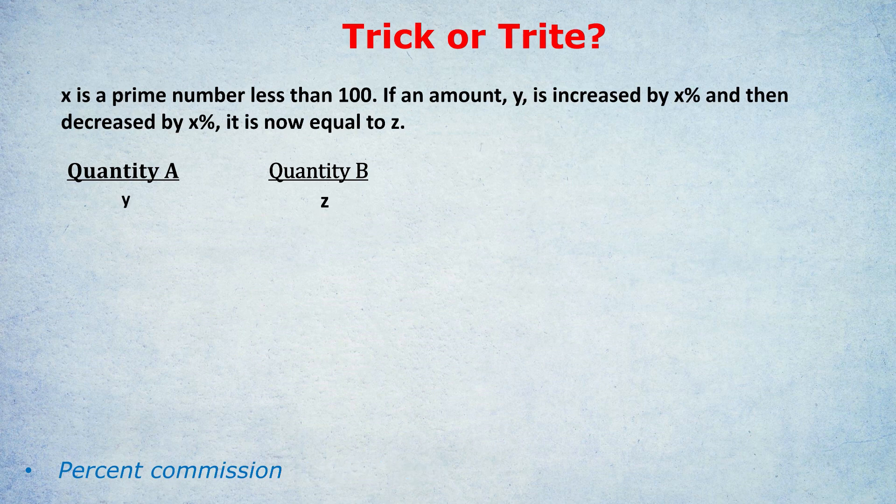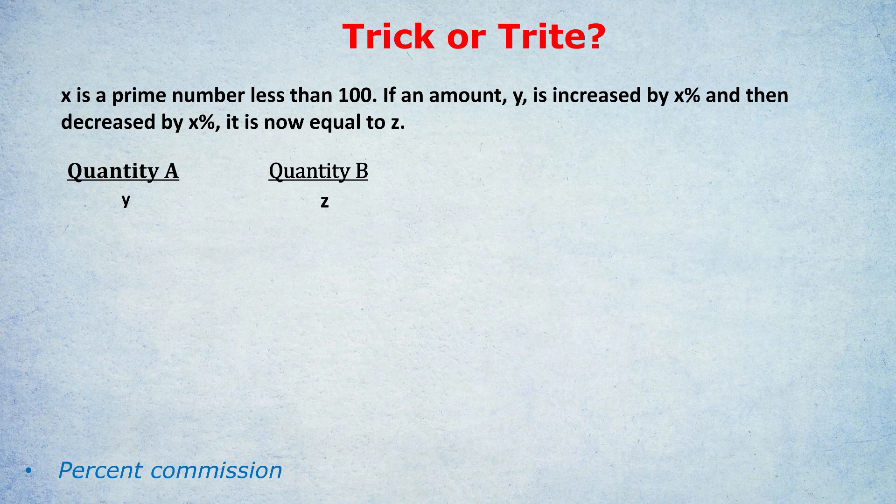x is a prime number, less than 100. If an amount y is increased by x percent, and then decreased by x percent, it is now equal to z. What's bigger? Quantity A, which is y, or quantity B, which is z. As ever, pause the video and have a go.